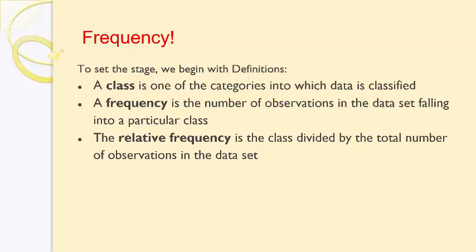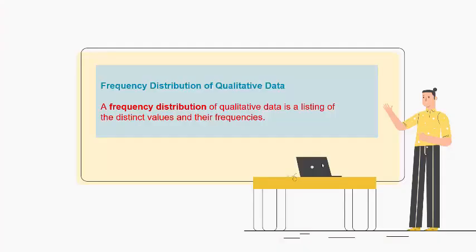Then we introduce relative frequency, which is the class frequency divided by the total number of observations — it's the proportion of values that fall within a certain class. Instead of saying there are five freshmen, you'd say my class is 25% freshmen. The five would be the frequency, and the 25% would be the relative frequency.